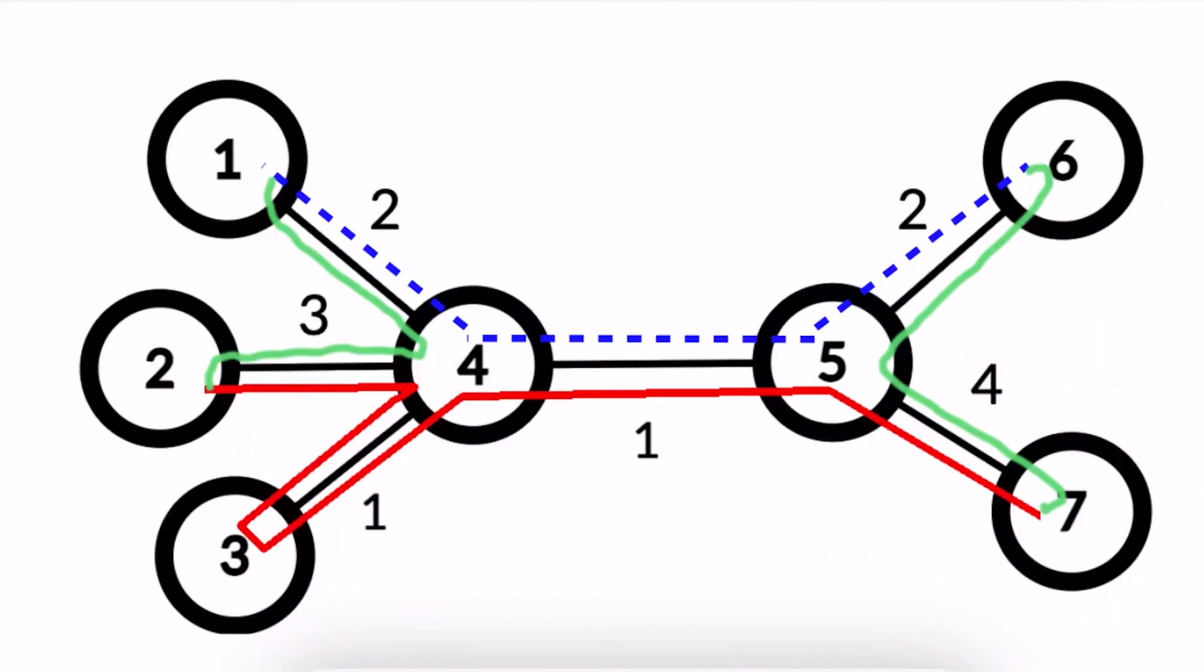So the task is reduced to finding two simple paths which do not have any edges in common such that their total length is the highest possible. This can be solved with dynamic programming on a tree.